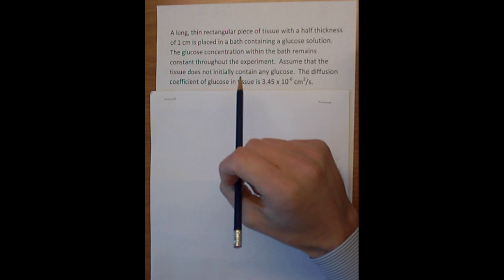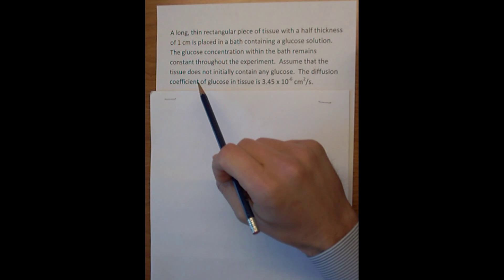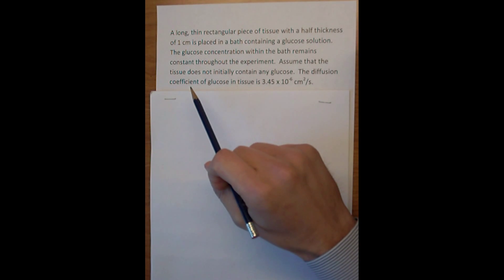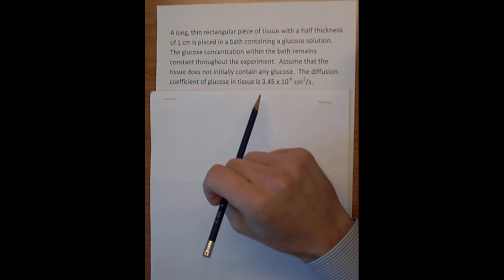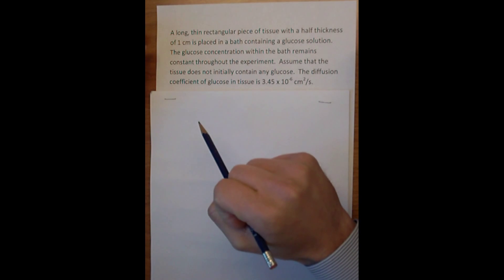The glucose concentration within the bath remains constant throughout the experiment. Assume that the tissue does not initially contain any glucose, and the diffusion coefficient is 3.45 times 10 to the negative 6.